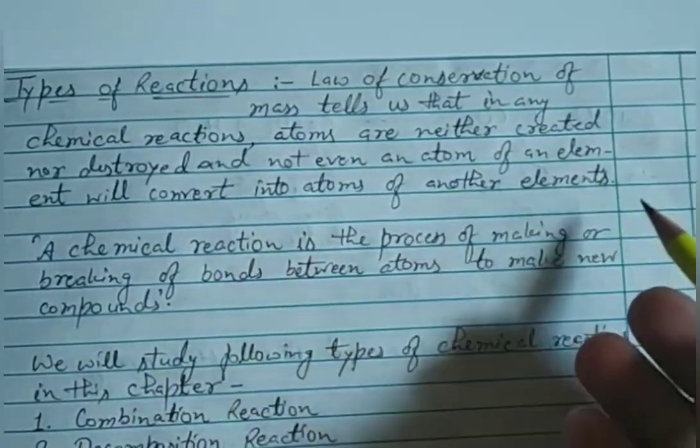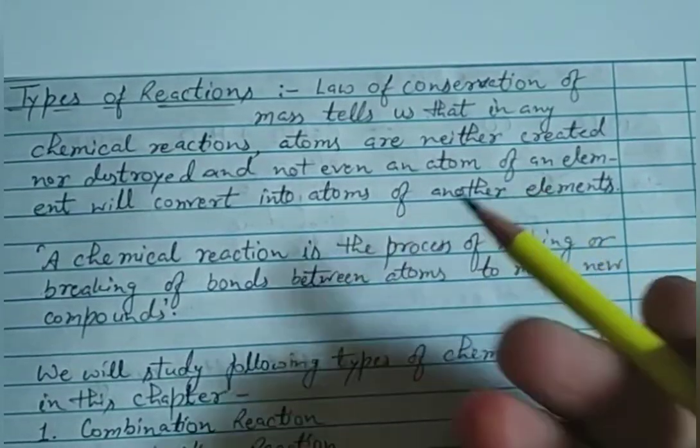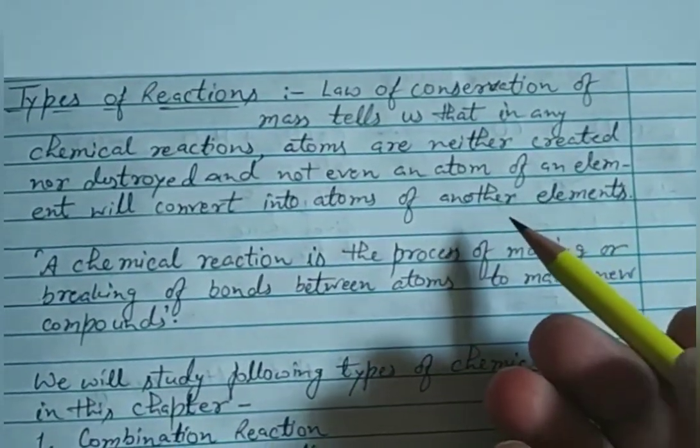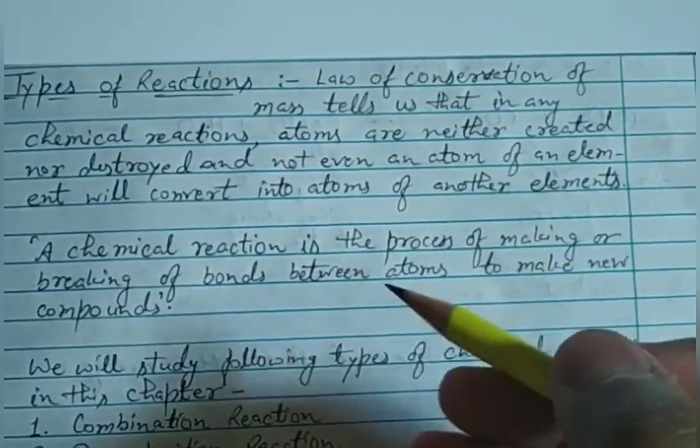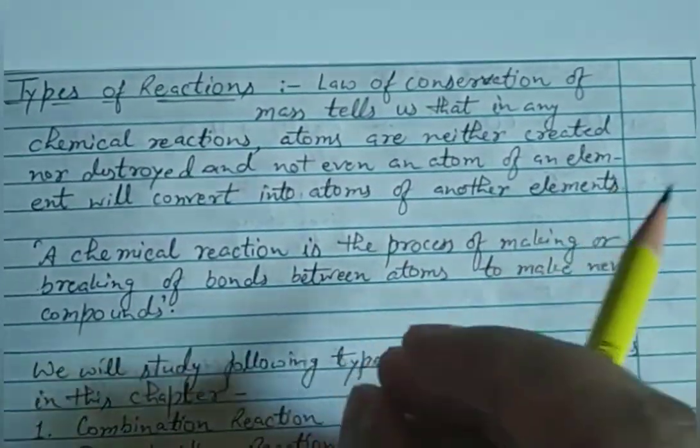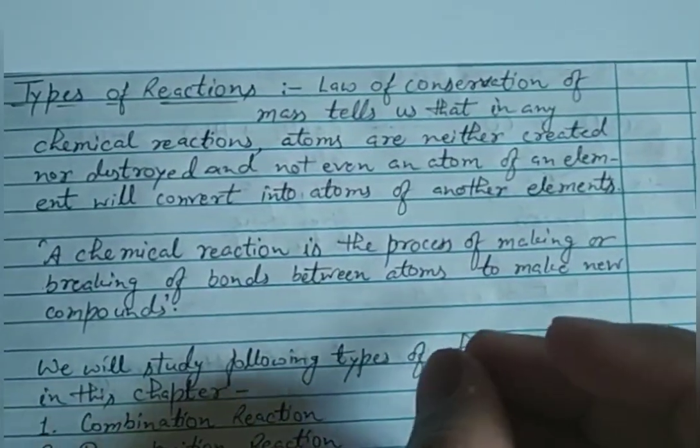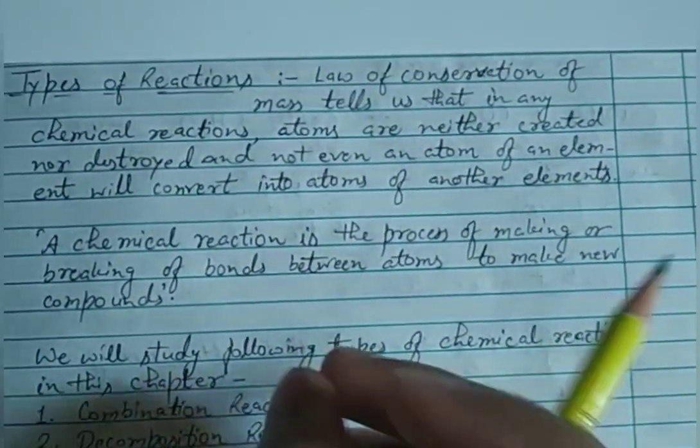For example, when carbon burns in oxygen and forms carbon dioxide, the atoms of carbon and oxygen are not changed into carbon dioxide - they remain atoms of carbon and oxygen. So what actually happens in a chemical reaction?